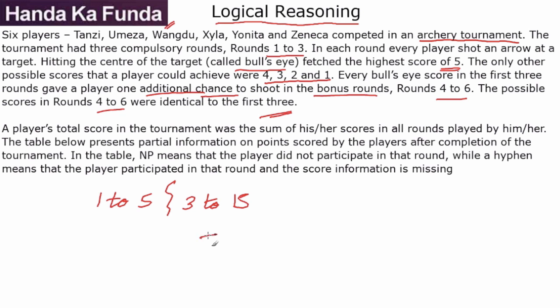So let's say, suppose you got 5 in the first round, 2 in the second round, 5 in the third round. Then you will get two more bonus shots because you hit the bull's eye twice. A player's total score in the tournament was the sum of his scores in all rounds.